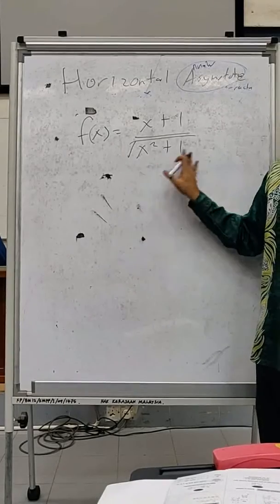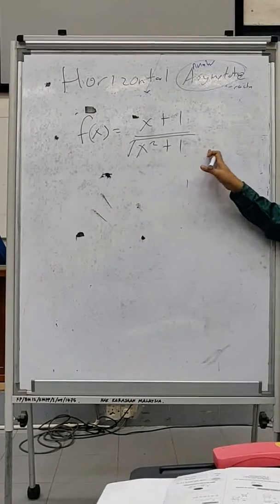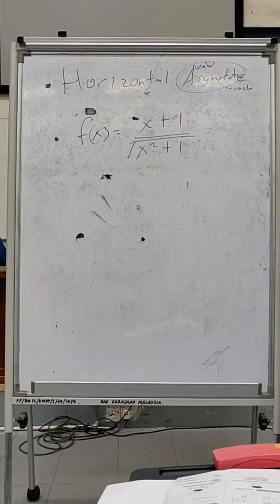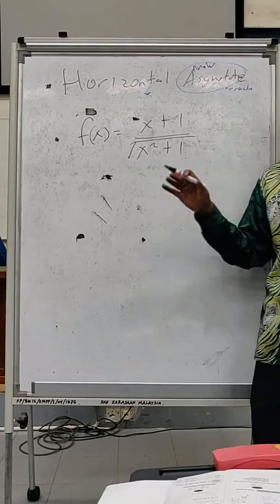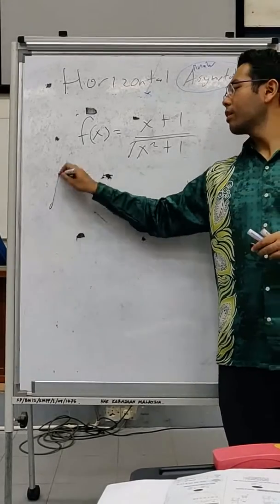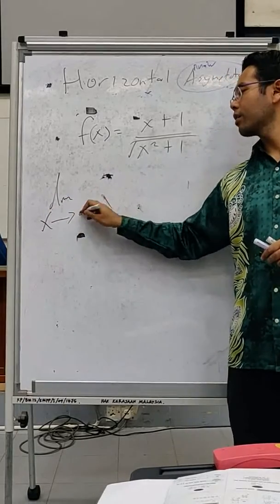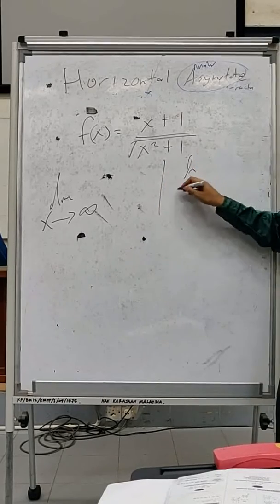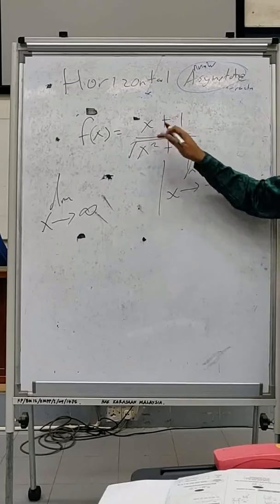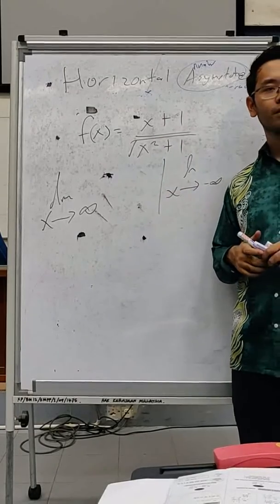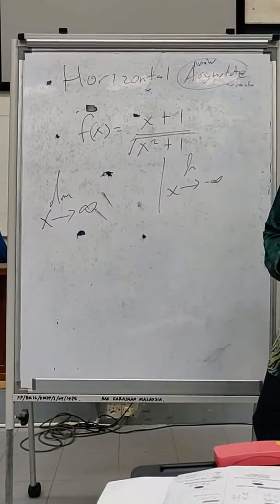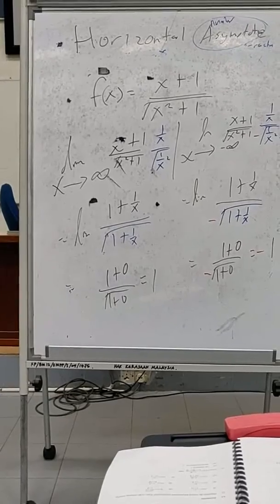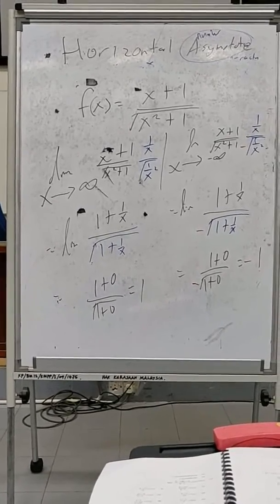For this one here, why don't you try by yourself — find the horizontal asymptote. For horizontal asymptote, what should you do? You need to check x approaching infinity and x approaching negative infinity. If you're right, give it a try. Okay, will you get the same answer for both sides? One and negative one — one, right?